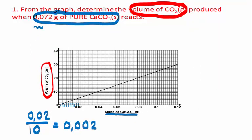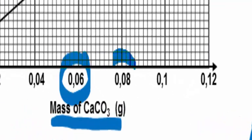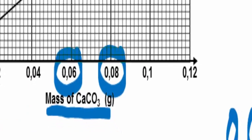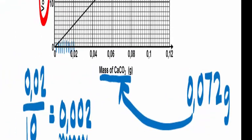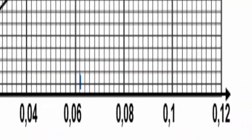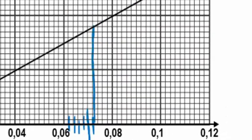So here we need 0.072 grams. How do we read 0.072 grams? Here we have 0.06 and here 0.08. Obviously 0.072 is somewhere in between, almost in the middle, but a little bit closer to 0.08 than the middle. Since each division stands for 0.002, we count up: 0.062, 0.064, 0.066, 0.068, 0.070, and this one here is 0.072. So we come up and then we read across.